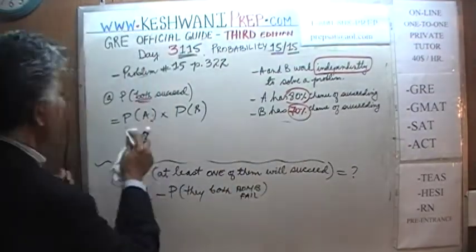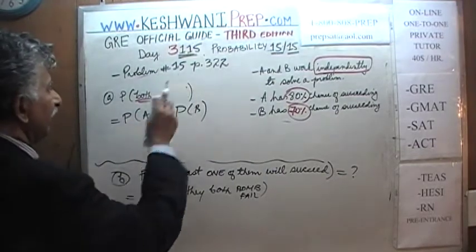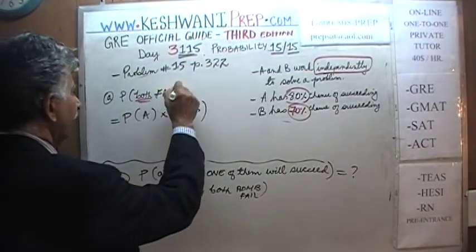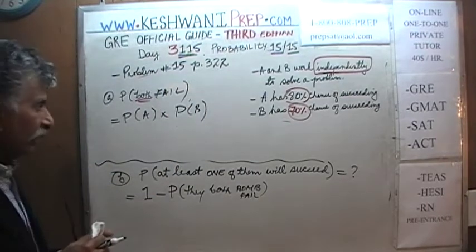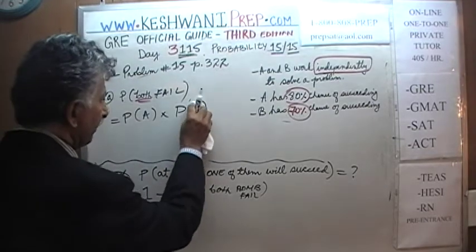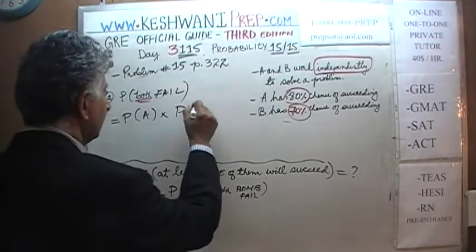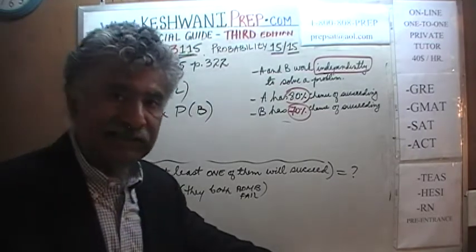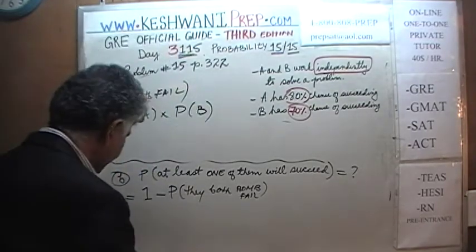What are the odds that they both fail? Instead of both succeeding, they are going to both fail. And the odds of both of them failing again is simply the product of the two odds individually. We are not talking about these two people succeeding. We are talking about these two people failing.